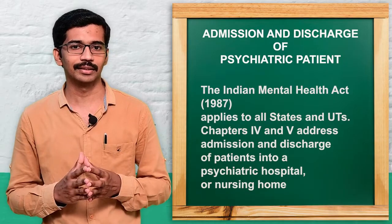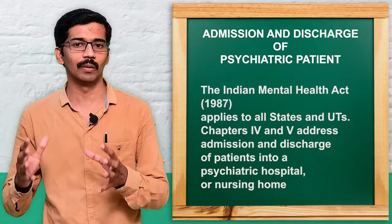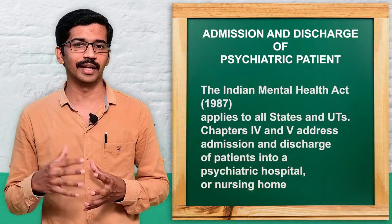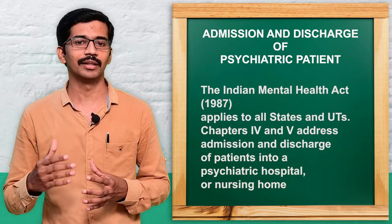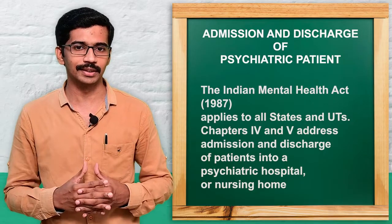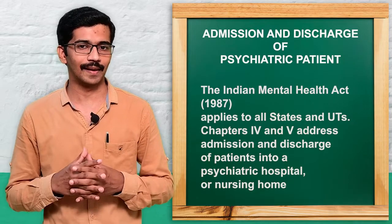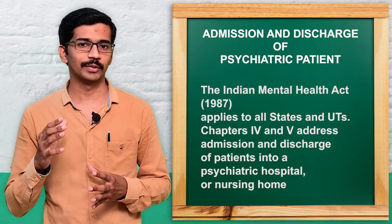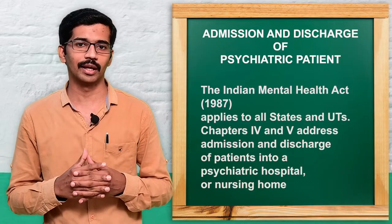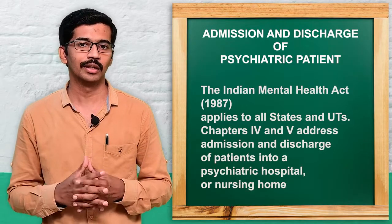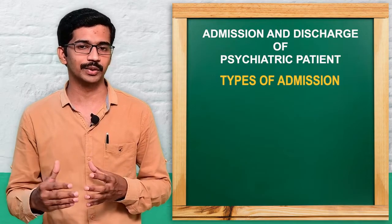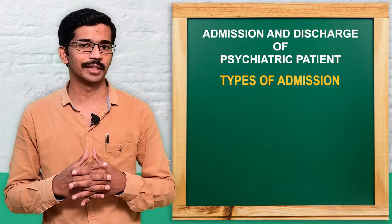The Indian Mental Health Act was established in the year 1987, and in the year 1993, the Government of India made it compulsory that all the states of India and the union territories follow the Indian Mental Health Act. Chapter 4 and Chapter 5 explain regarding the admission and discharge of a psychiatric patient into a psychiatric hospital or psychiatric homes.